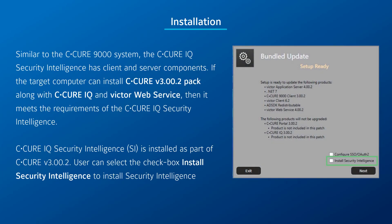Similar to the CQR9000 system, the CQRiQ Security Intelligence has client and server components. If the target computer can install CQR version 3002 pack along with CQRiQ and Victor web service, then it meets the requirements of the CQRiQ Security Intelligence. CQRiQ Security Intelligence is installed as part of the CQR version 3002.